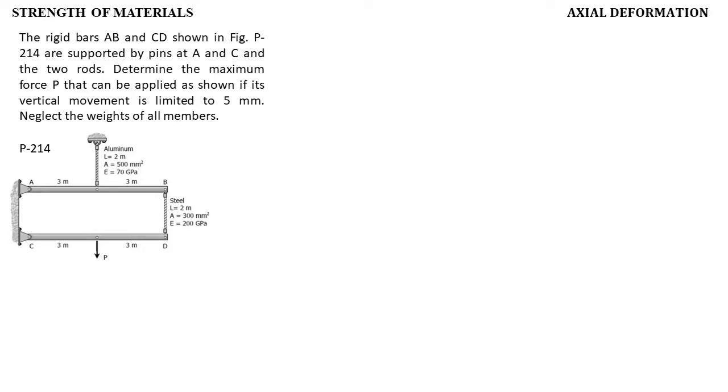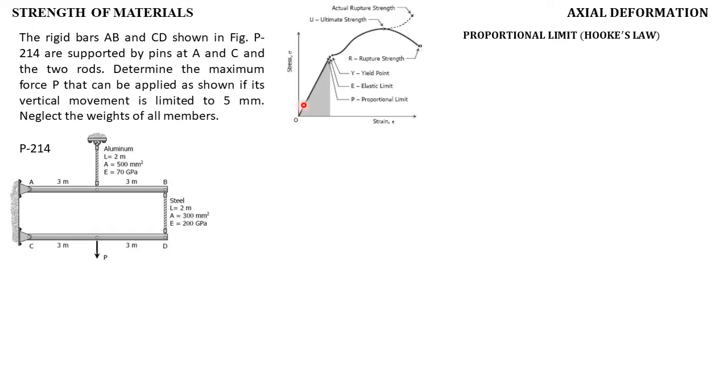Before we proceed to solve this problem, let's have a brief background on how they derive the formula for axial deformation. From the stress-strain diagram and from the proportional limit or Hooke's law, from 0 to P, or the proportional limit, the stress-strain curve is a straight line, meaning that the stress and strain is directly proportional to each other.